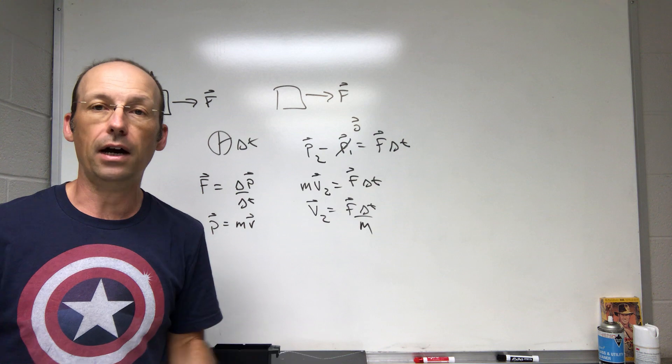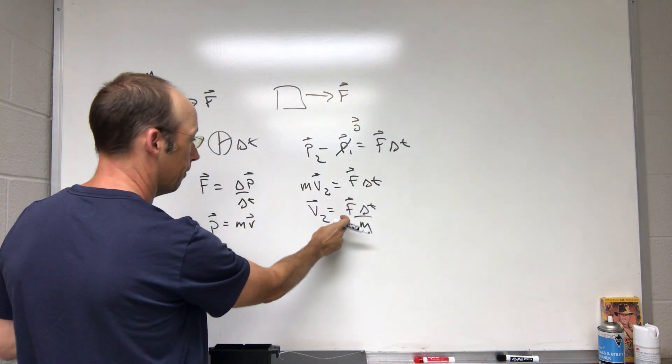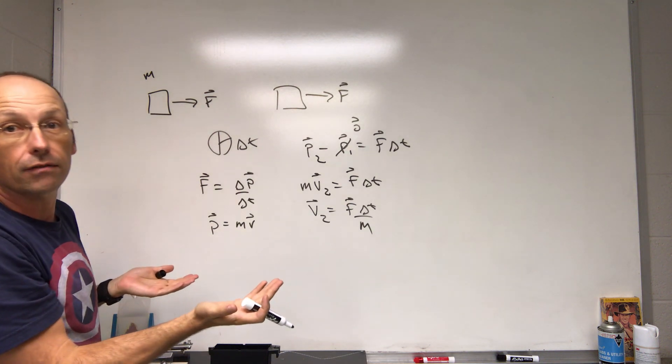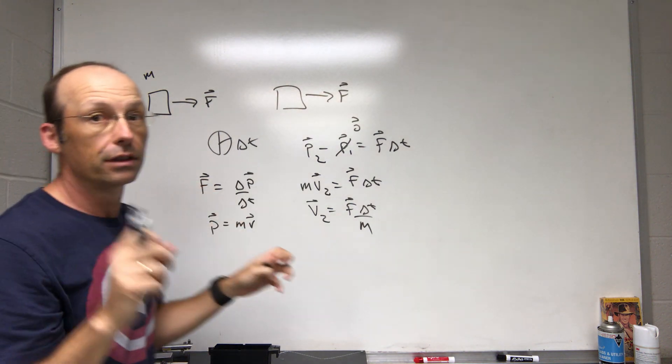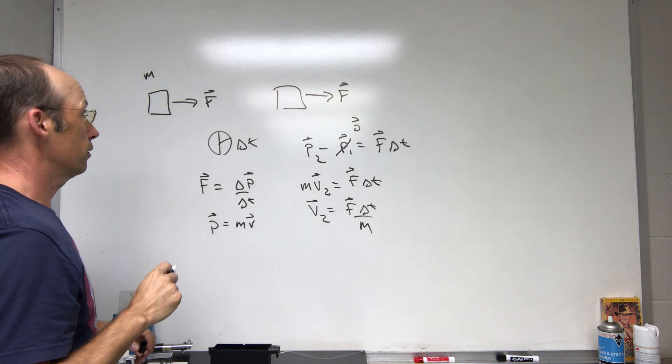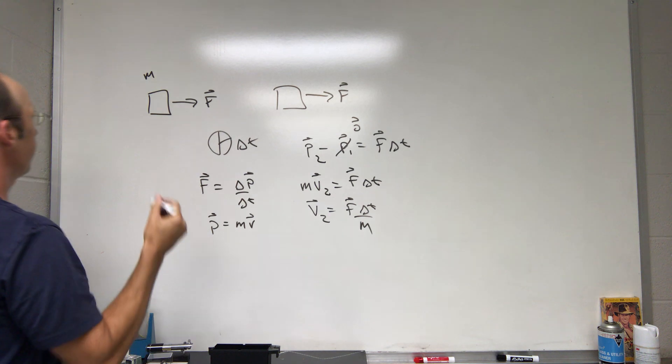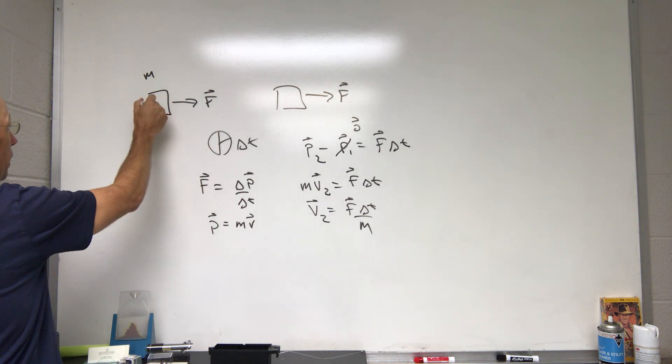V 2 equals F Delta T over M. I could put in some values in there and everything's fine. This is just the momentum principle. F over M would be the acceleration, right? So you could do this as Newton's second law and you get the same thing.